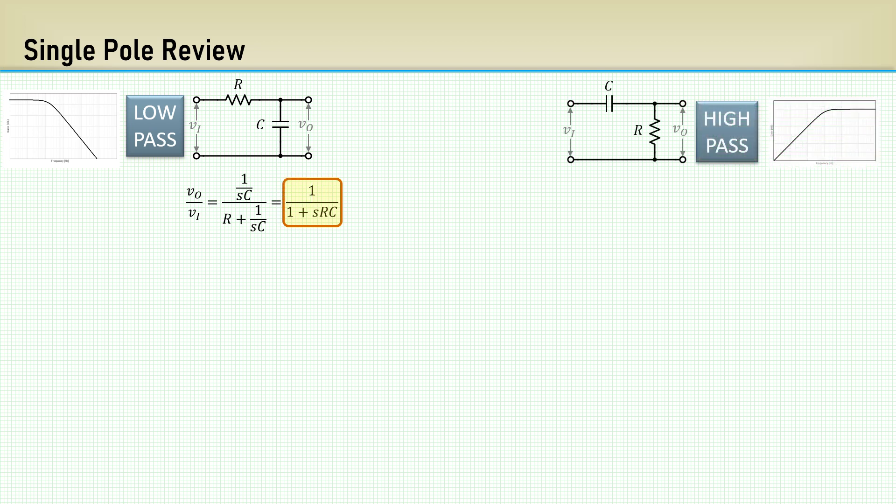Doing the same for the high-pass function, we get 1 over 1 plus 1 over SRC. This is the interstage capacitive coupling. The corner frequency is where the resistance equals the capacitive reactants.